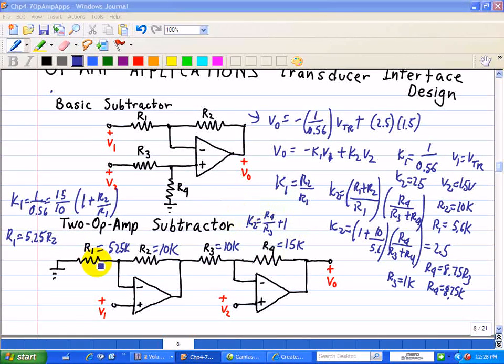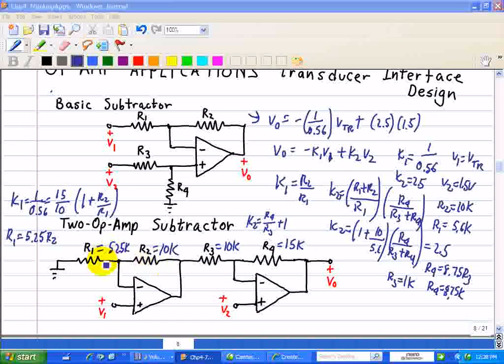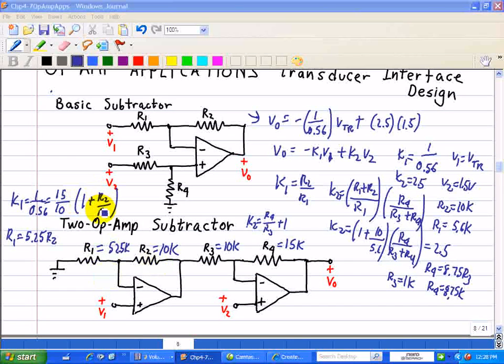Now let's look at the second term. We note that the overall gain for what we call K1 is 1 divided by 0.56. We know this stage here is 15 over 10 or 1.5 and this is a non-inverting amplifier for this first stage, so it's 1 plus R2 over R1.